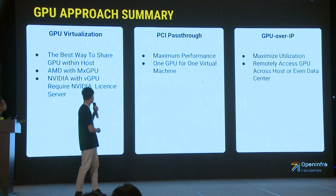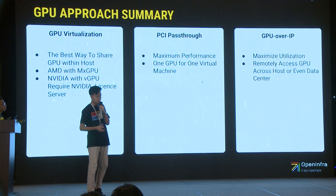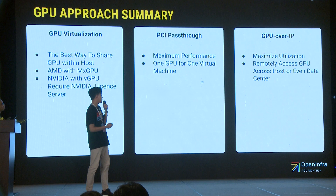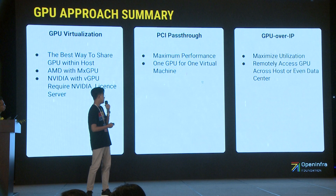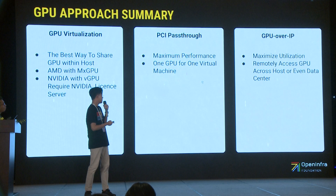The next option is PCI pass-through — this is how to obtain maximum performance because the GPU is exclusively available to a single instance: one GPU for one virtual machine. And my favorite is GPU over IP, which gives you maximized utilization because one GPU can be shared across many VMs through the internet protocol — it can be remotely accessed across hosts or even across data centers.